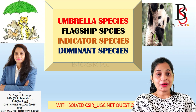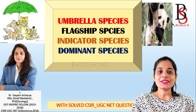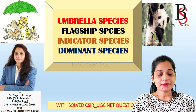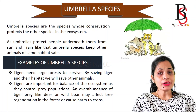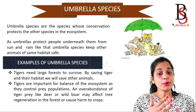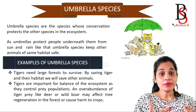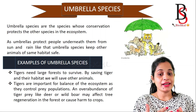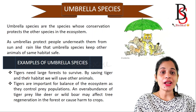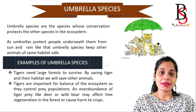Let's see some other important ecological species. The first one is umbrella species. Just as an umbrella protects people underneath it from the sun and rain, umbrella species keep other animals safe in the same habitat.